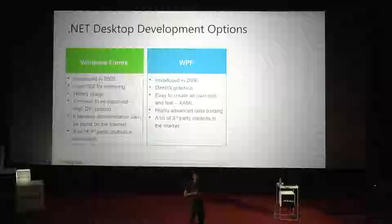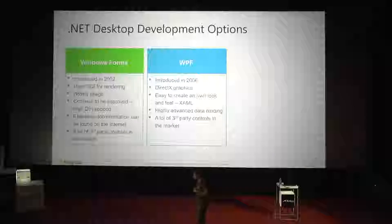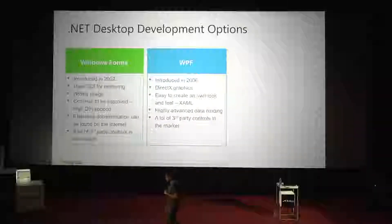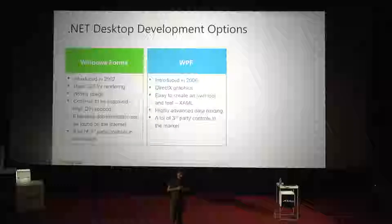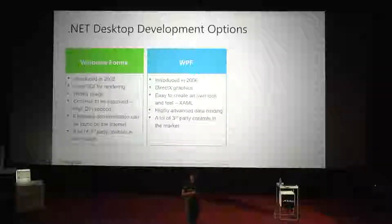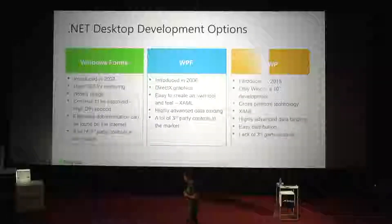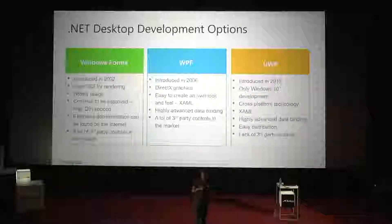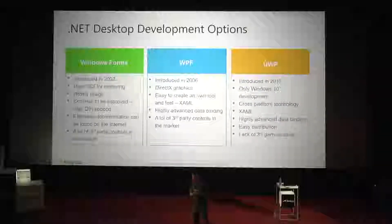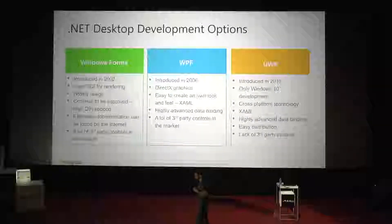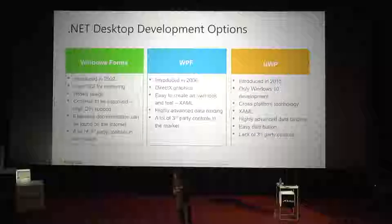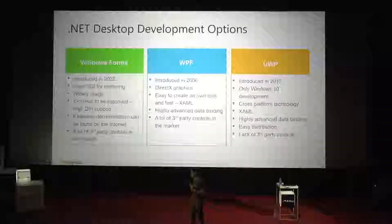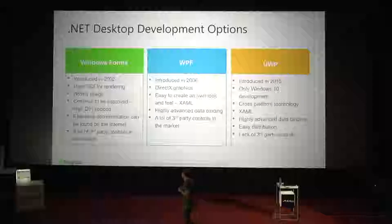XAML makes it easier to distinguish your front-end logic from your back-end logic. Since the technology is 12 years old, it has a lot of documentation, resources, and third-party controls available. Three years ago, Microsoft released Universal Windows Platform. UWP is not a pure desktop technology — it's a technology for building cross-platform applications that can run on IoT, Xbox, HoloLens, Windows Mobile, and desktop.